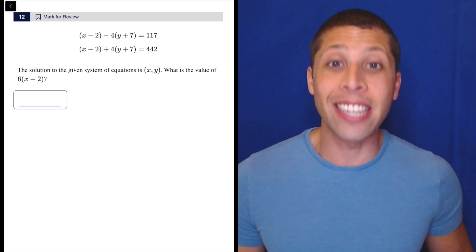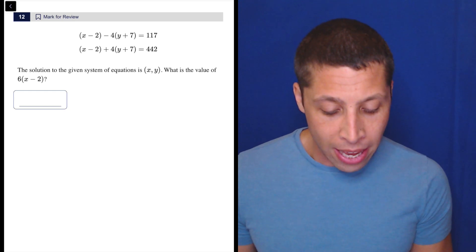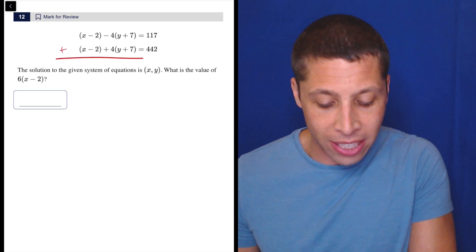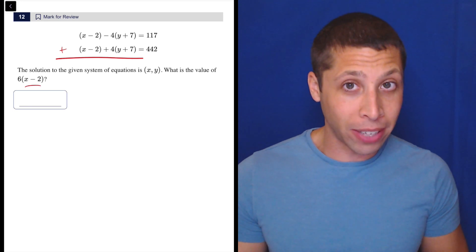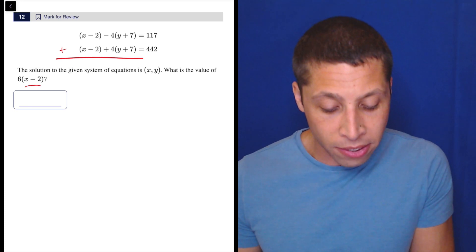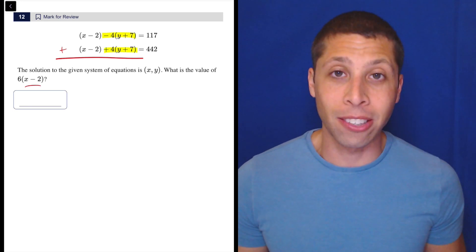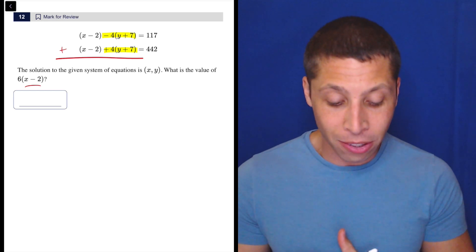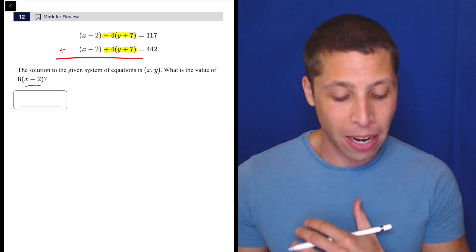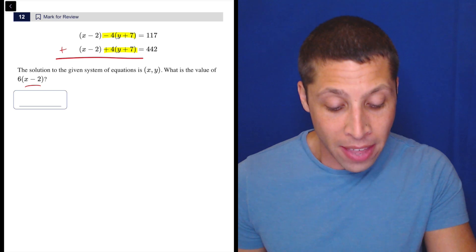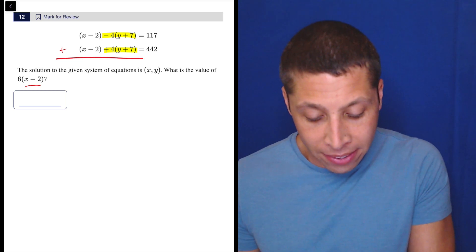There's a very easy, convenient solution. You're going to see that if I add these two equations together, I'm going to end up with kind of like an x minus 2 because these two pieces are going to cancel each other out. I mean, it's a minus 4(y + 7) and then a plus 4 times (y + 7). They cancel out nicely. So if I add this down, I'm going to get 2(x - 2) equals...